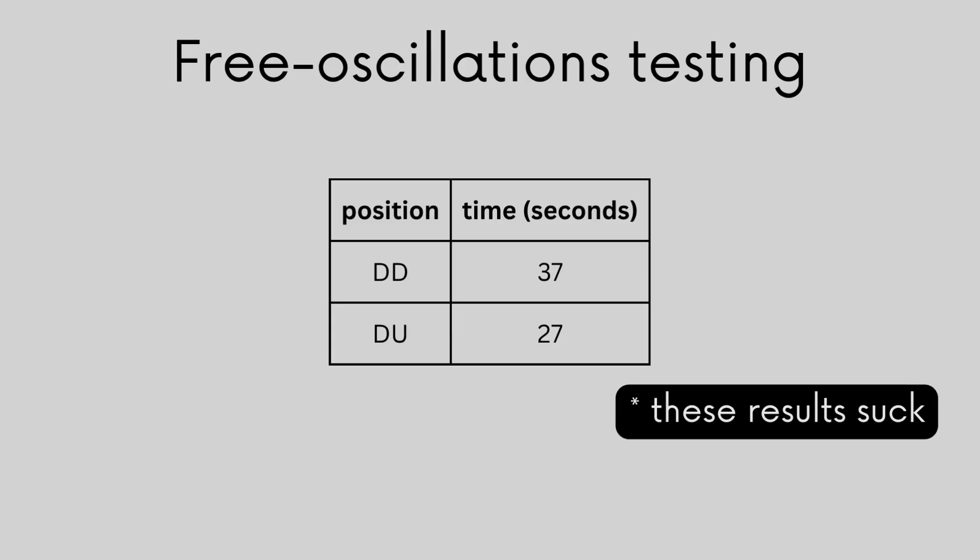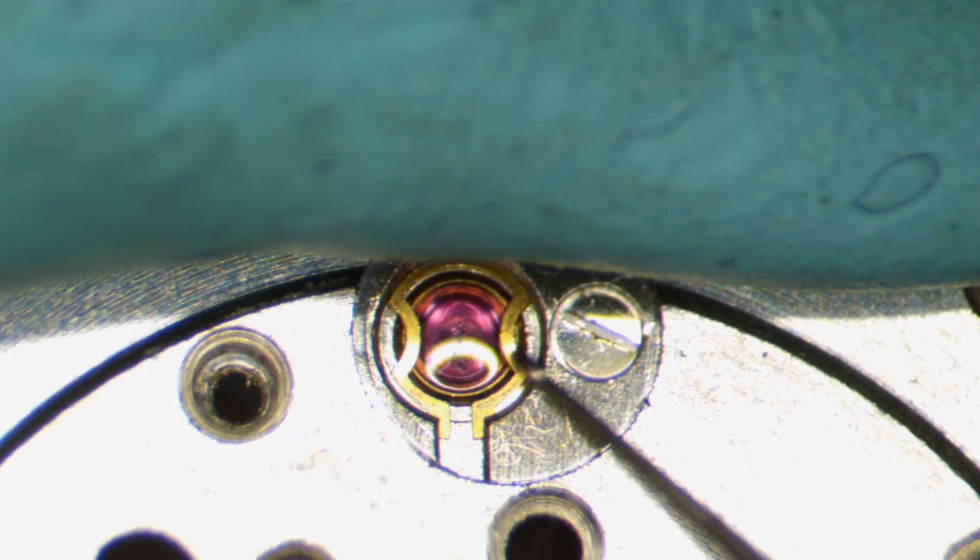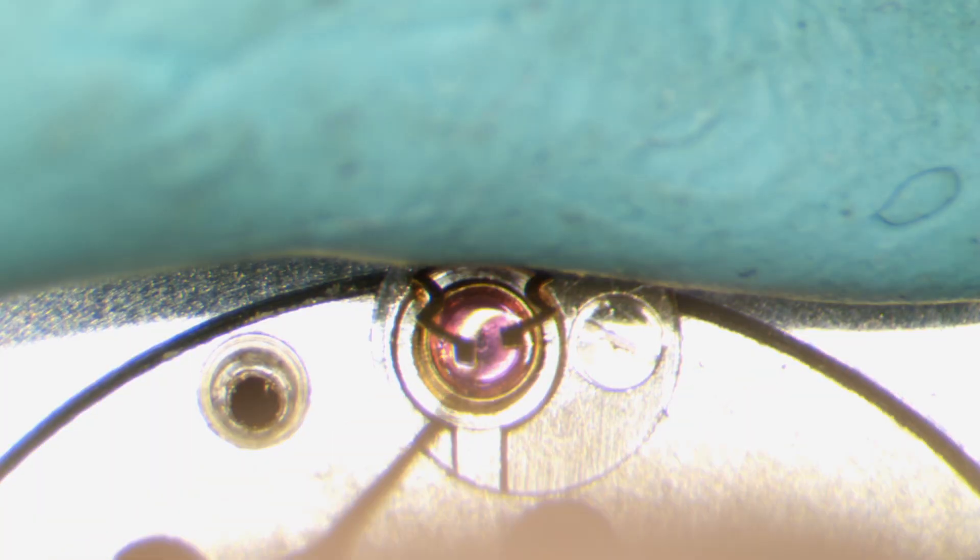And here we see that the dial-up results are much less. So this confirms that there's a problem somewhere in the balance assembly and only in the balance assembly. There may be problems elsewhere in the movement, but definitely in isolation, the balance assembly has a problem. So to understand why, I removed the balance assembly and took it apart.